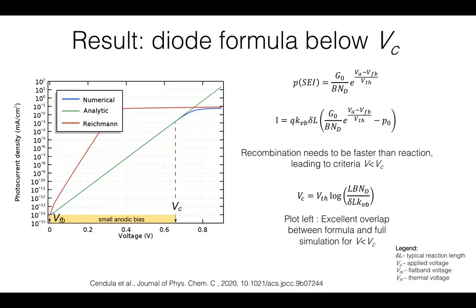By further derivation, which I will not go into detail, but you can find it in our paper in JPCC, we obtained a diode photocurrent formula below a certain critical voltage.